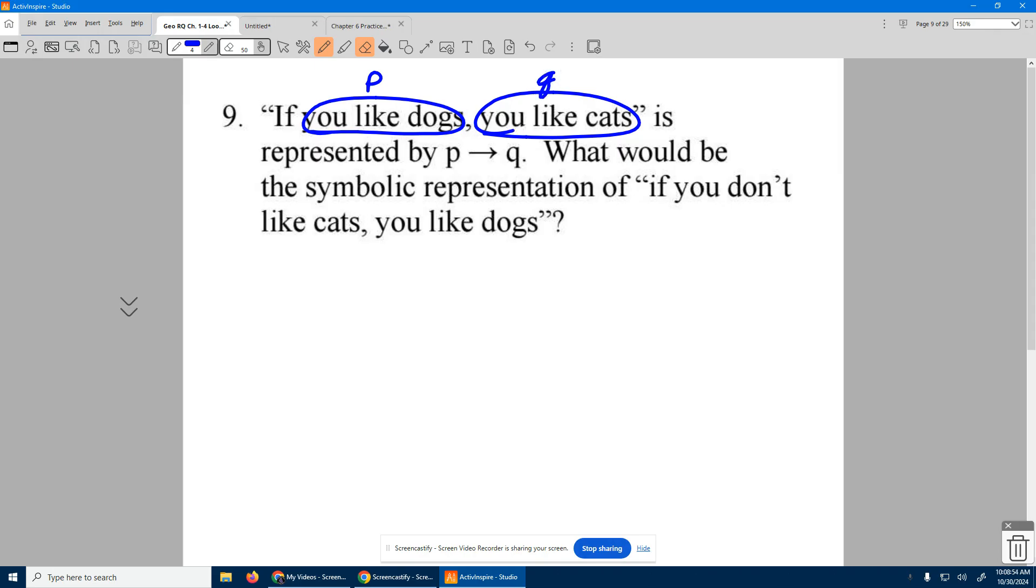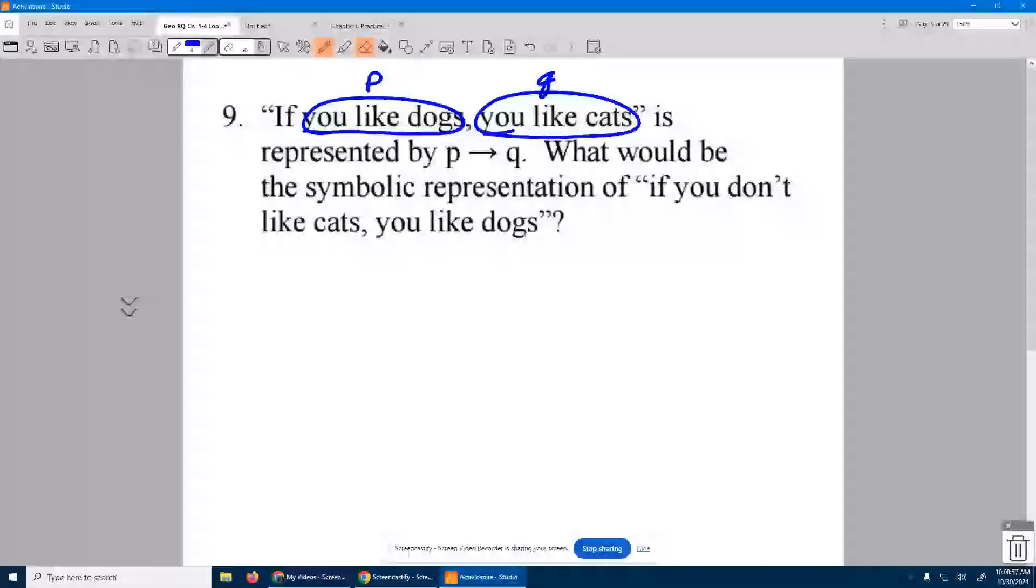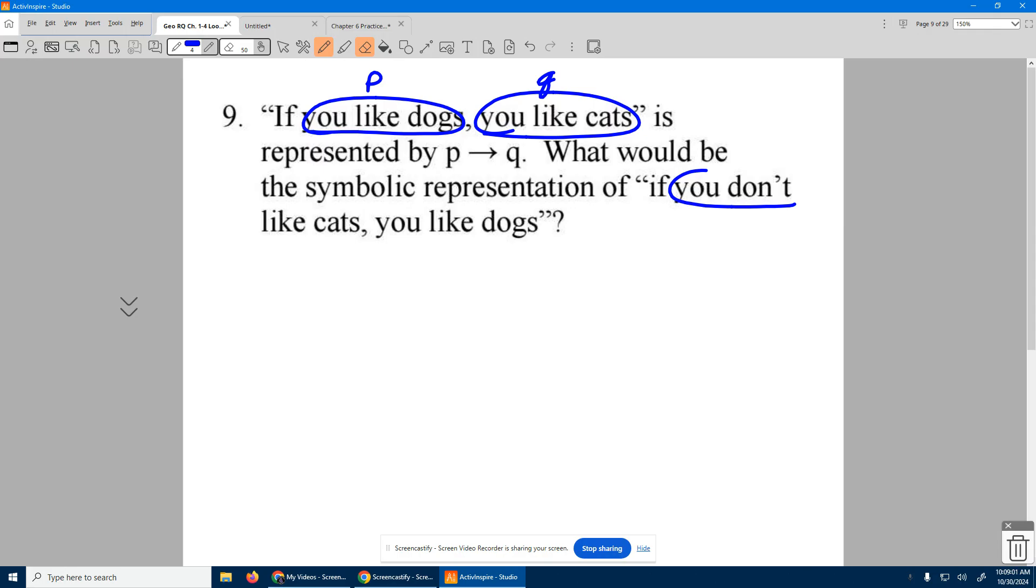What would be the symbolic representation of if you don't like cats, you like dogs? So we need you don't like cats. Well, who's talking about cats? That's the Q statement.